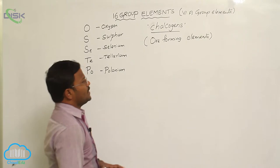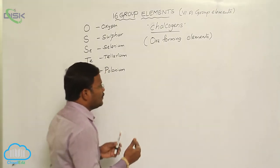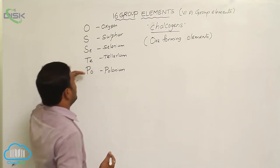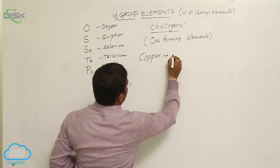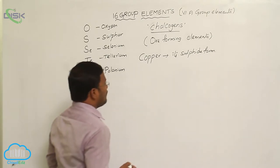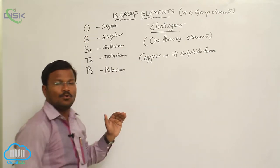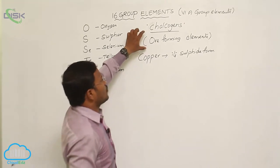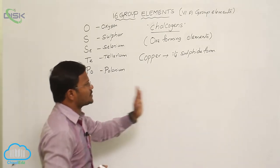The word 'chalcogens' is derived from the Greek language because many metals are available in the form of their sulfides or oxides, or in combination with remaining elements of the same group. Especially, copper is available in its sulfide form or other complex material form in combination with selenium, tellurium, polonium, etc. So oxygen, sulfur, selenium, tellurium, and polonium are called chalcogens because they are ore-forming elements, and many metals are available in the form of their oxides and sulfides.